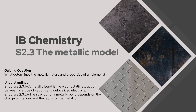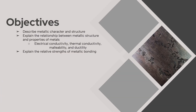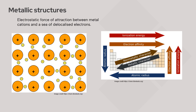Hello friends and welcome to our video lecture on topic S 2.3 the metallic model. Our guiding question for today: what determines the metallic nature and properties of an element? Our objectives for today: we're going to describe metallic character and structure, explain the relationship between metallic structure and the properties of metals — electrical conductivity, thermal conductivity, malleability, and ductility — and take a quick look at the relative strengths of metallic bonds.